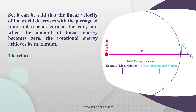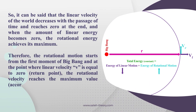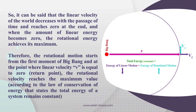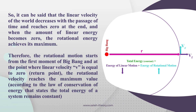The linear velocity of the universe decreases with the passage of time and reaches zero at the end. When the amount of linear energy becomes zero, the rotational energy achieves its maximum. The rotational motion starts from the first moment of the Big Bang, and at the return point where linear velocity v equals zero, the rotational velocity reaches its maximum value, according to the law of conservation of energy, which states that the total energy of a system remains constant.